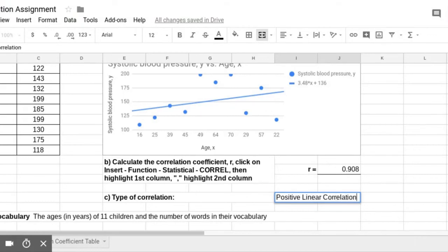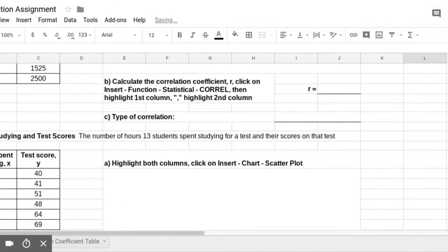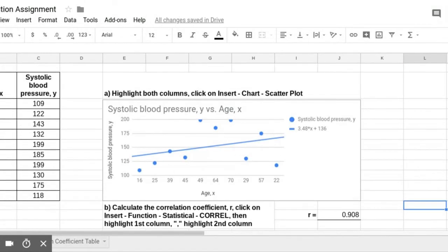And then the last type is we are going to identify the type of correlation, which you will say something like linear or positive linear. And that is how you will do problems 1 through 8.